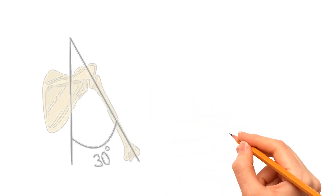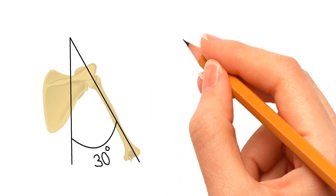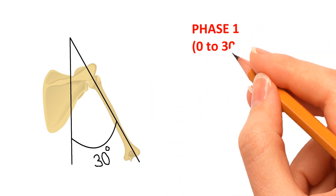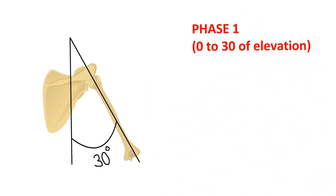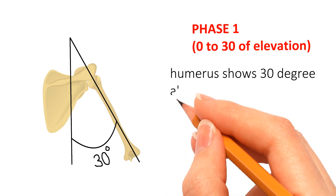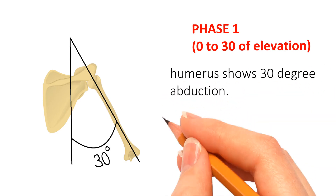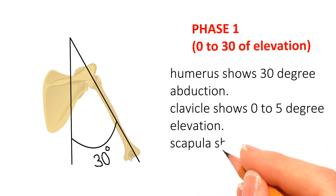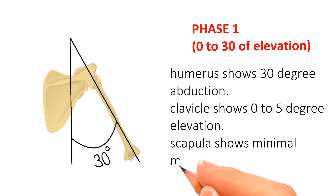Let's simplify all of the learning till now into three phases. Phase 1: with the first 30 degrees of elevation, the humerus shows 30 degrees of abduction, the clavicle shows 0 to 5 degrees of elevation, and the scapula shows minimal movement.